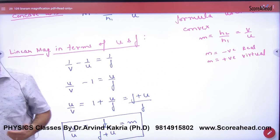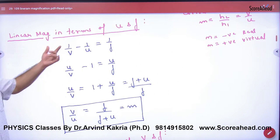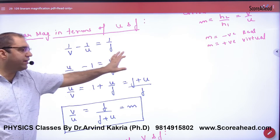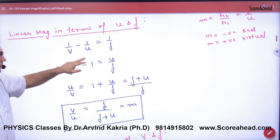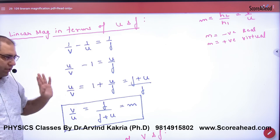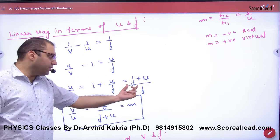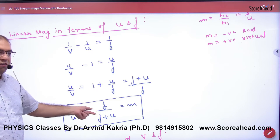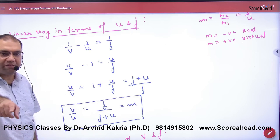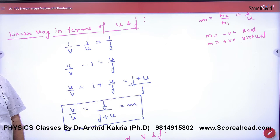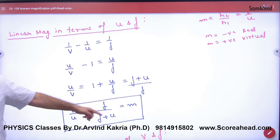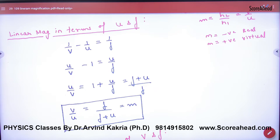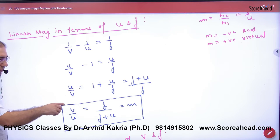One more thing — linear magnification M in terms of u and f. Write the lens formula and multiply both sides by u. This gives u/v on one side, and u/f terms on the other. Taking LCM with v and u and solving, the magnification m = v/u simplifies to: m = f divided by (f + u). Please note this formula — magnification equals f upon (f plus u). This is used directly in numericals when u is given.